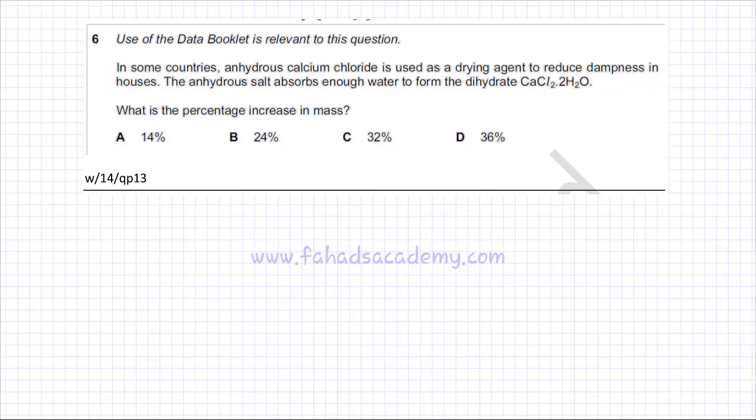In this question, the question states that in some countries, anhydrous calcium chloride - and the formula of calcium chloride is going to be CaCl2 because calcium is 2 plus, Cl is minus 1. So using the crisscross method, calcium chloride is CaCl2.